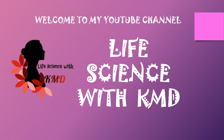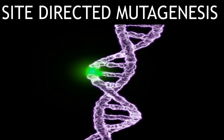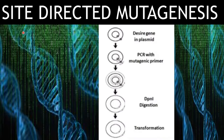Hey, what's up everyone, welcome to my YouTube channel Life Science with KMD. Today I am going to explain about site-directed mutagenesis. Site-directed mutagenesis is the method to create a specific change in the DNA — it could be either insertion, deletion, or substitution — to study the gene function. For that, first we need a plasmid.